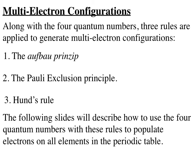Now we'll use the four quantum numbers along with three rules to populate electrons in a many-electron atom. We will apply the Aufbau principle, the Pauli exclusion principle, and Hund's rule. The next slides will describe how to apply these three rules along with the four quantum numbers.